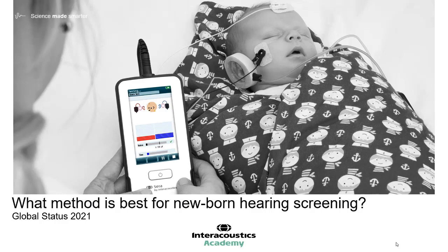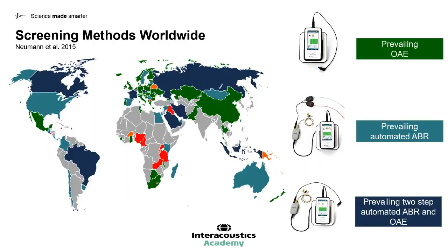In this video I'd like to explore which method is best for newborn hearing screening. According to the Joint Committee on Infant Hearing, there are three approved newborn hearing screening methods: the first is otoacoustic emissions, the second is automated ABR, and the third is a two-step otoacoustic emissions and automated ABR approach.